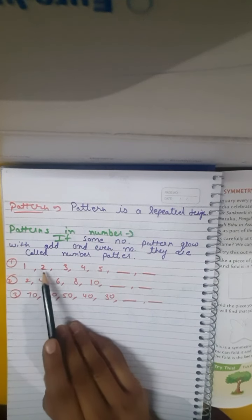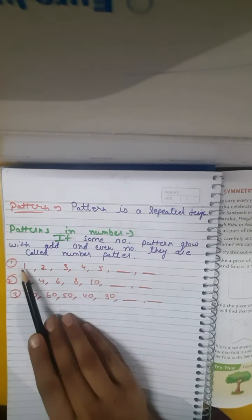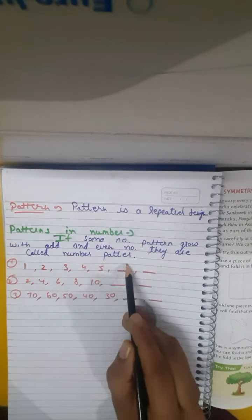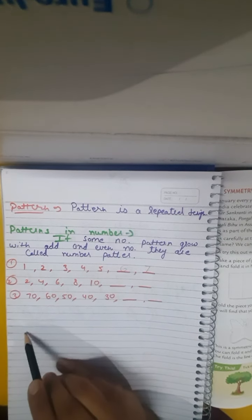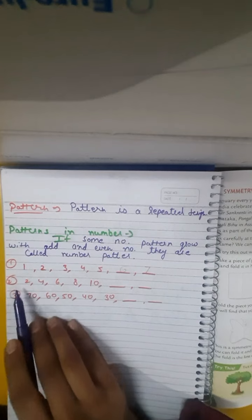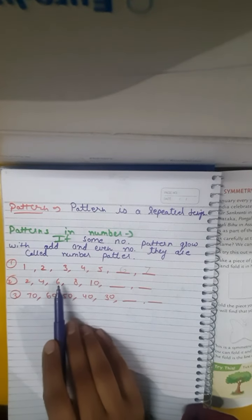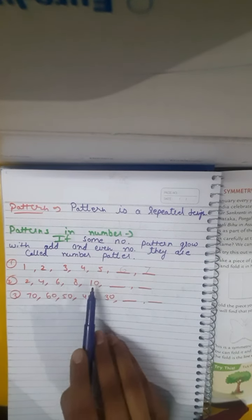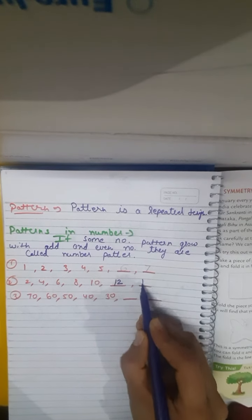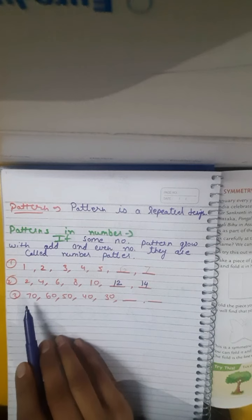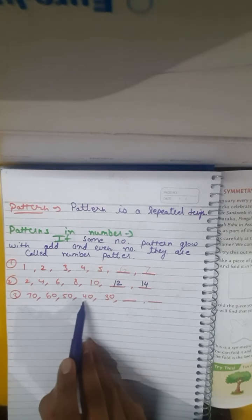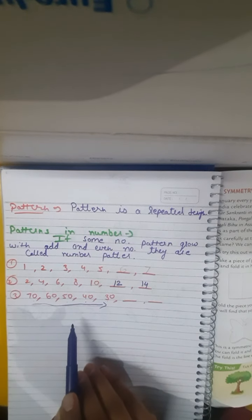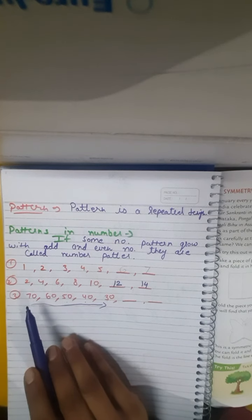Examples: 1, 2, 3, 4, 5 — what comes after 5? It is 6, then 7. The next example: 2, 4, 6, 8, 10 — this is the table of 2. 2×6=12 and 2×7=14. The next example: 70, 60, 50, 40, 30 — this is a decreasing uniformly specific number pattern. What comes next? 20 and 10.